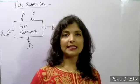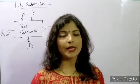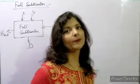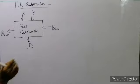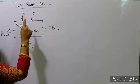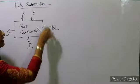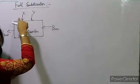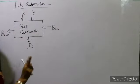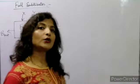So in full subtractor we will see the circuit diagram — there will be 3 inputs: x, y and borrow in. And there will be 2 outputs: D (difference) and B out (borrow out). What we have to do is x minus y minus borrow in. There will be 2 single bit binary values y and borrow in, and we will get 2 outputs: difference and borrow out.